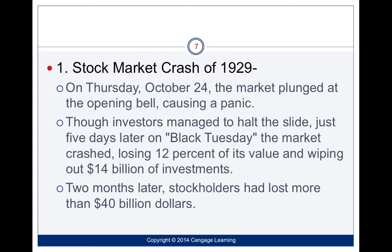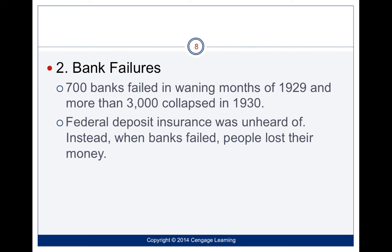Black Tuesday wiped out about $14 billion in investments — remember, $14 billion in 1929 money. The banks also failed: 700 banks failed in the waning months of 1929 and 3,000 collapsed. We didn't have federal deposit insurance like we have now. Federal deposit insurance means that banks cover up to $250,000 of your money, so each of your accounts are protected up to that amount.